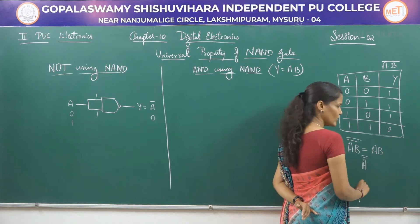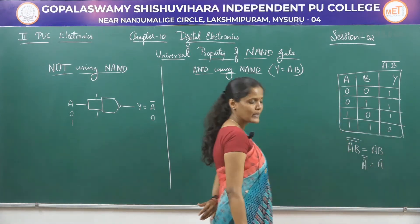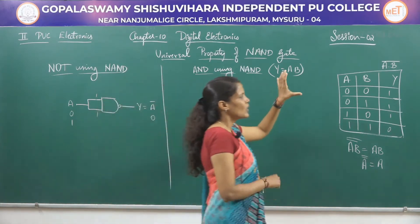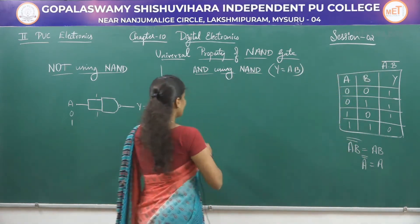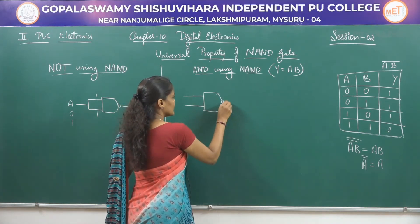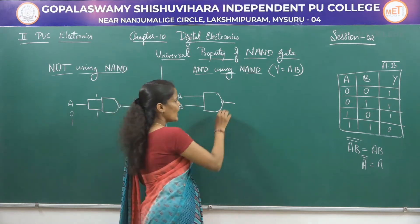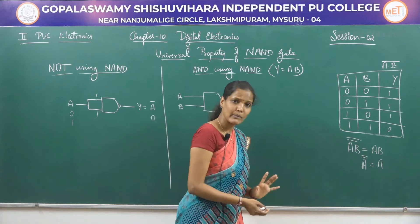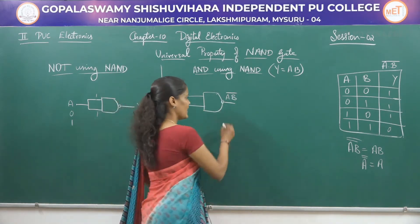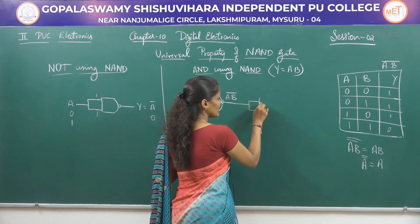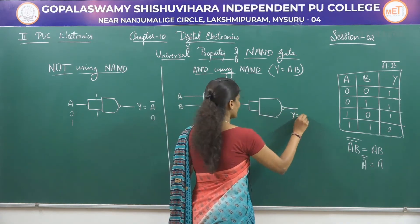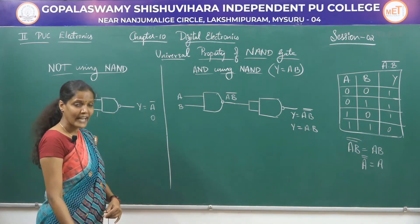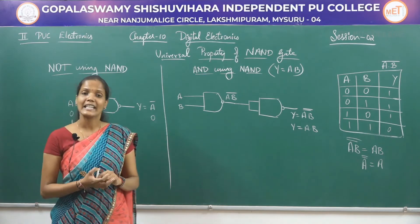We are going to use two NAND gates. We give inputs A and B to the first NAND gate; its output is A·B whole bar. If we invert that output again, we get A·B double bar, which equals A·B — the logical expression for an AND gate. To invert this, we just short both input terminals of the second NAND gate, and its output Y = A·B double bar = A·B. So by using two NAND gates we can easily realize an AND gate.